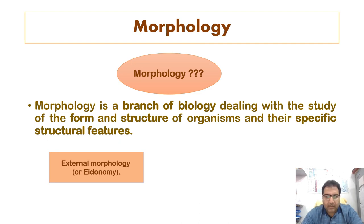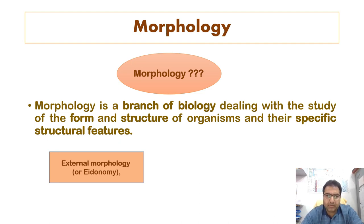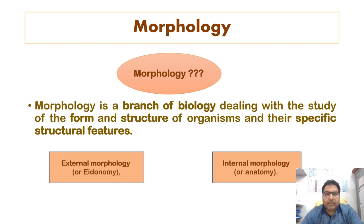We also know external morphology by the name of igenomy. Igenomy refers to the external features of an organism — its appearance, its outward appearance. And we must also know about internal morphology, which many times we refer to as anatomy.